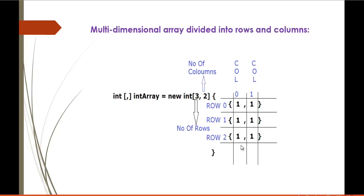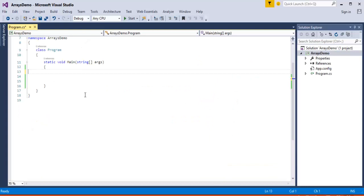This is the multi-dimensional array as shown in the previous slide. 'int[,]' — the comma specifies that a two-dimensional array reference variable is created. Using this comma we can do the job. The array name is 'intArray', the 'new' keyword is used to allocate memory for the array, the number of rows is three and columns is two. This is how it stores two columns and three rows. To understand it very clearly, we'll jump into coding — I'll fire up Visual Studio.